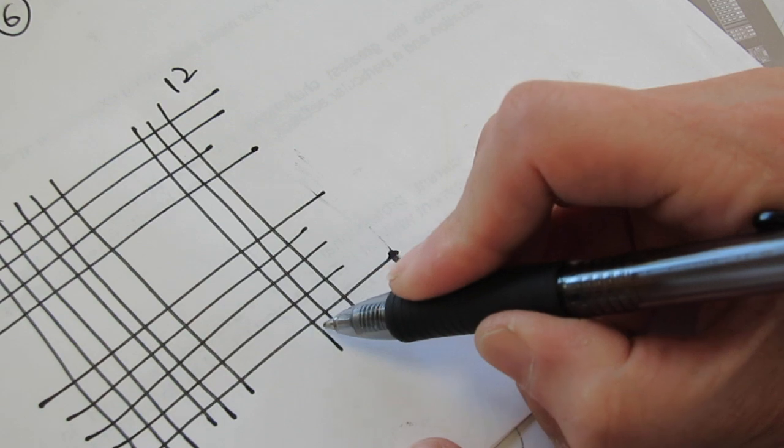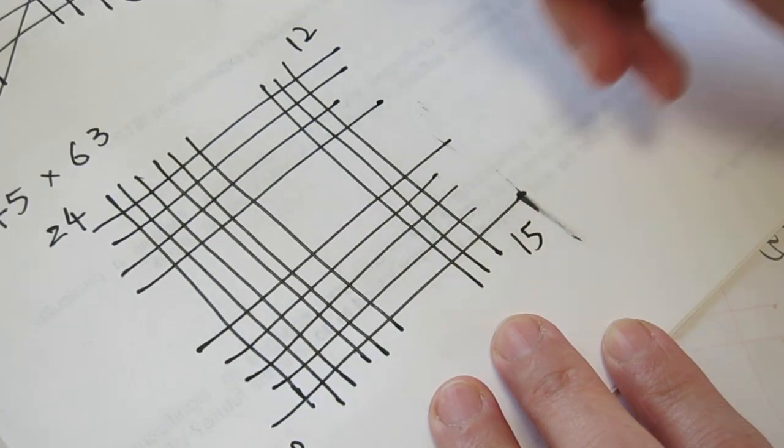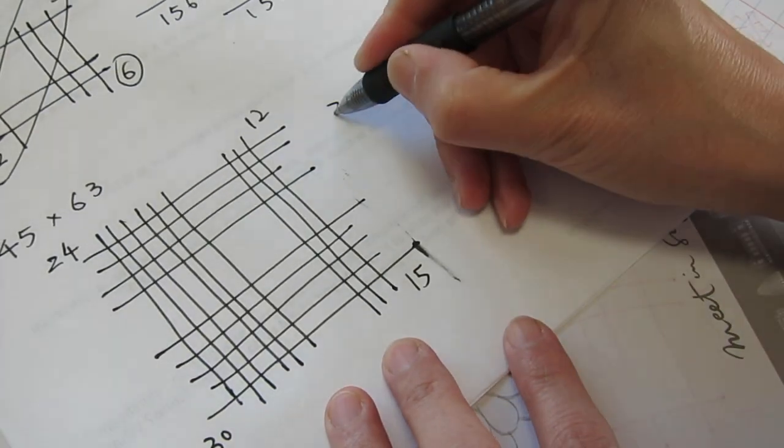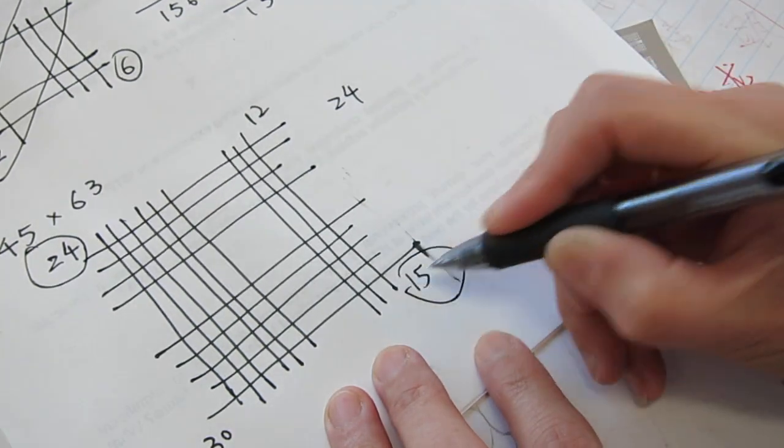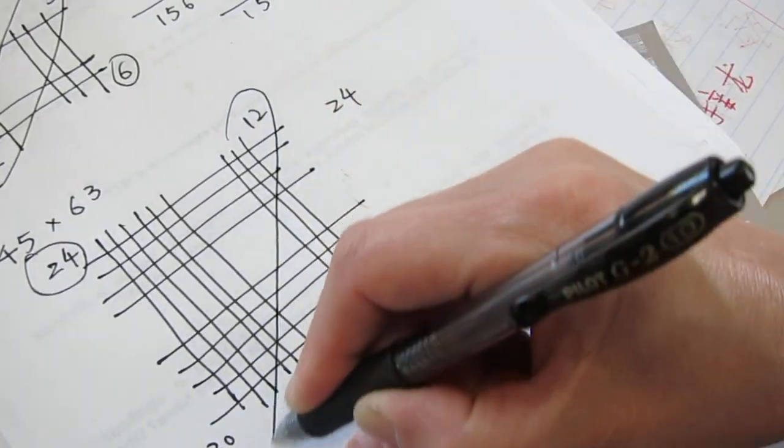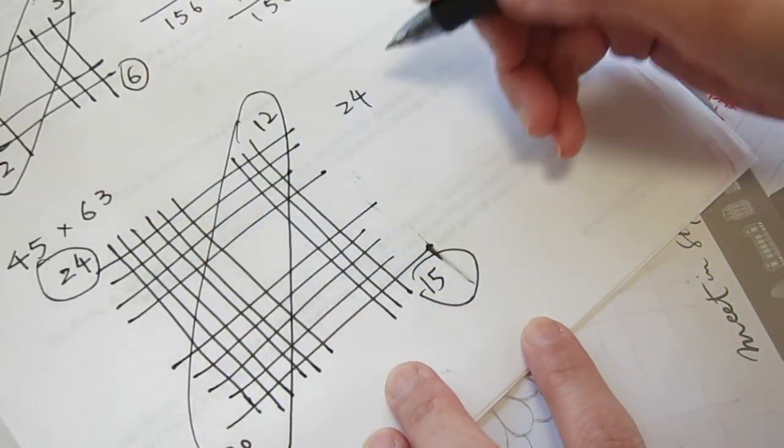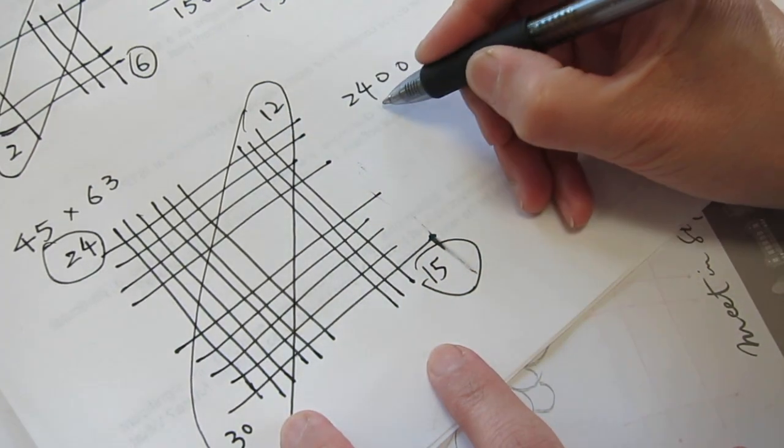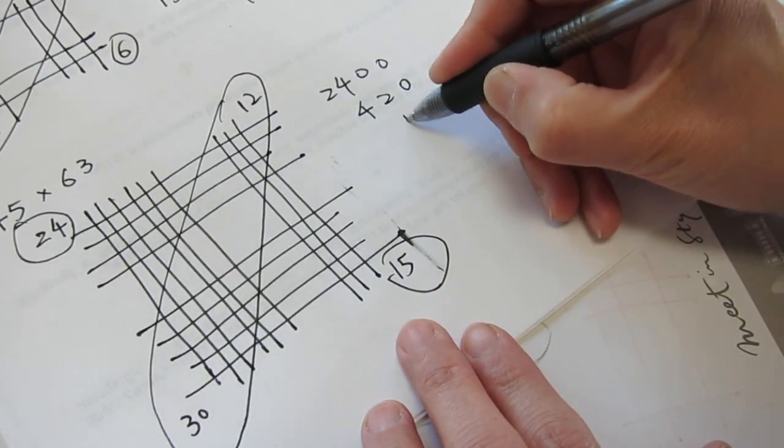And this one is 1, 2, 3, 1, 2, 3, 4, 5, 15. So 24. So you can see, 24, this is in the 100s, 100s, and 1s. And this one is in the 10s.